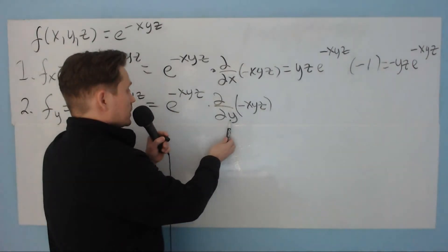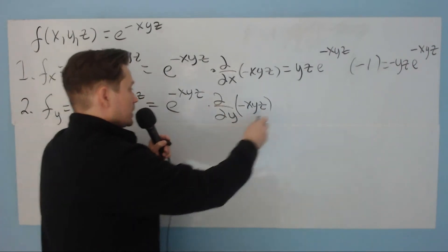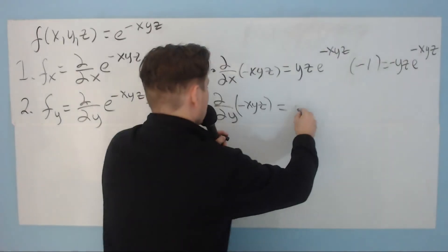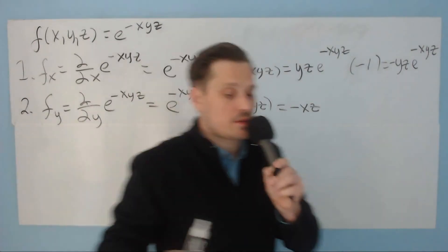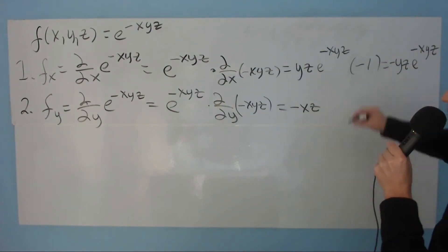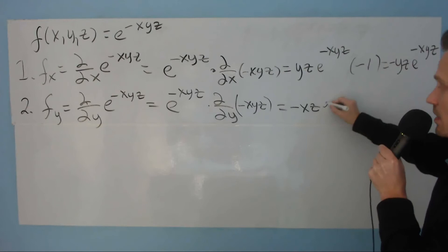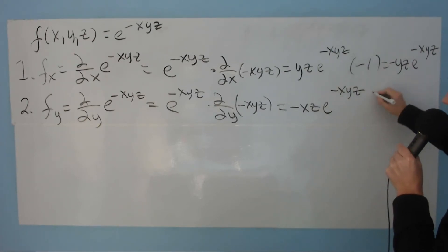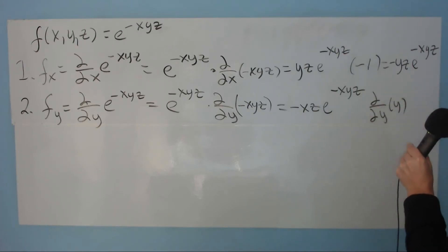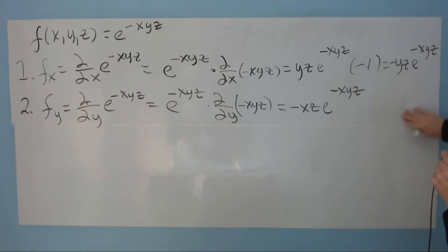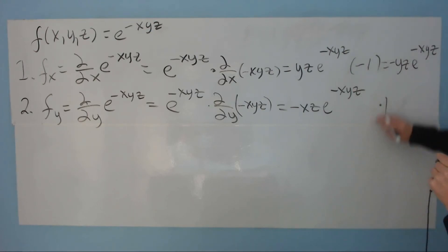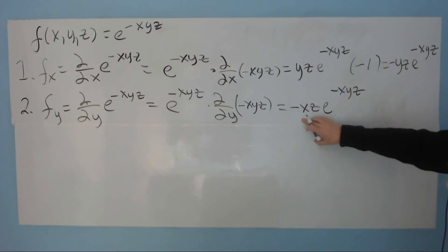And again, because you're differentiating with respect to y, the x and the z this time are constants — so place them out front. The next step will look like this: you're going to have negative x, z. You take the negative x and the z and move them out to the front of e, then multiply by the partial with respect to y of y, which is just 1. Multiplying anything by 1 doesn't change it, so you don't even need that 1. So the partial with respect to y is negative x, z times e to the negative x, y, z.